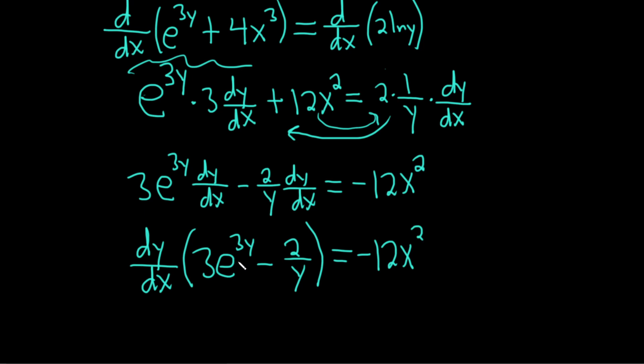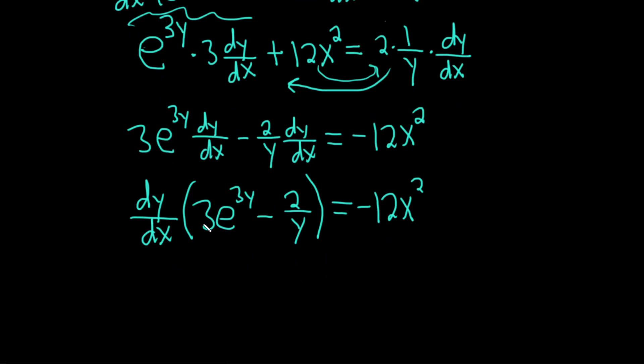The last thing to do is just divide by all of this, because it's being multiplied. So to solve for dy/dx, all we do is divide by 3e to 3y minus 2 over y. Same thing here, 3e to 3y minus 2 over y.